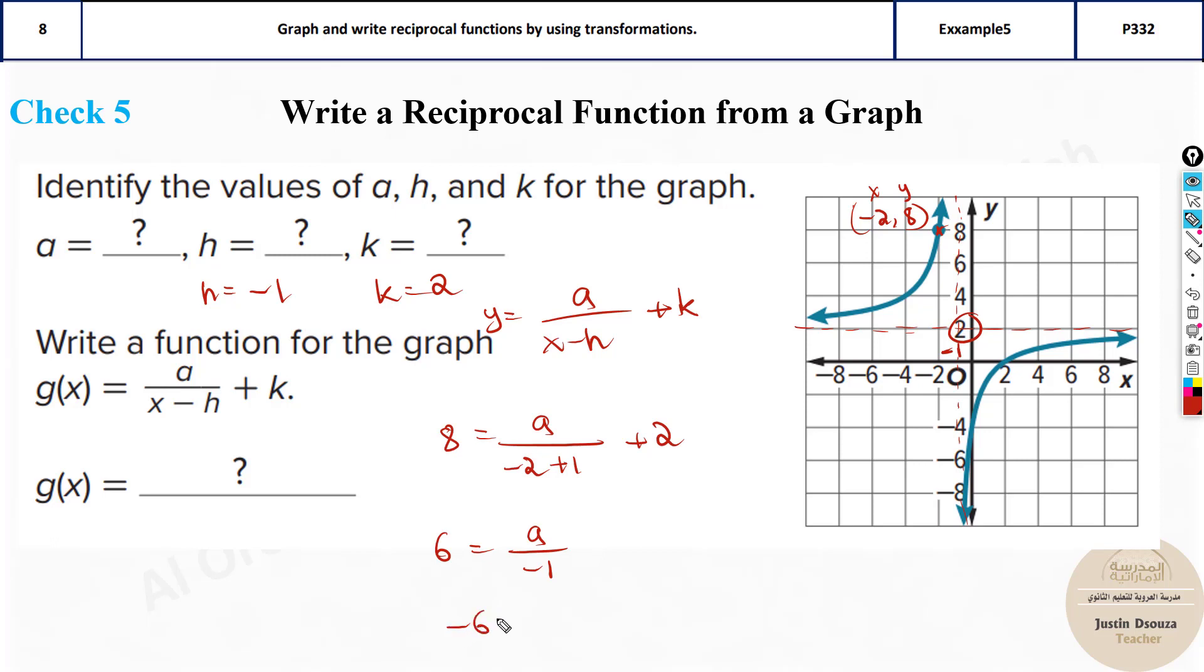It will be minus 6 equals a. So that is the answer. So a value is minus 6, h is minus 1, k is minus 2.